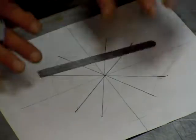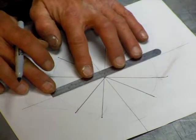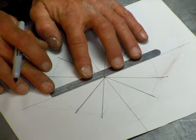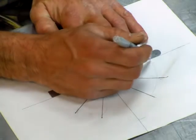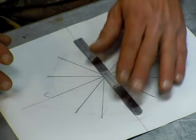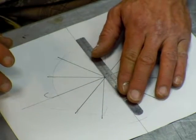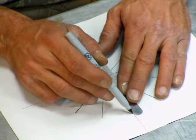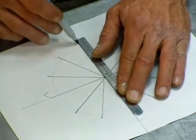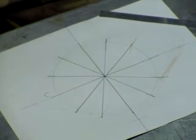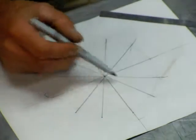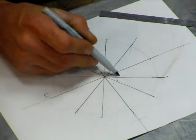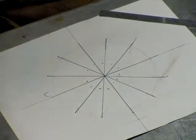So, there you go. Let me darken these just so you guys can see them good too. And there you have your 12 points. All 30 degrees apart. Nicely spaced.